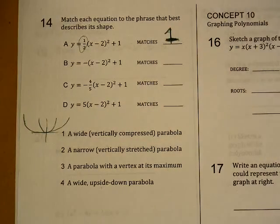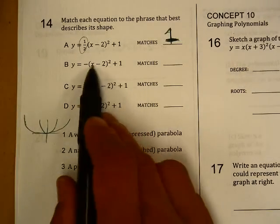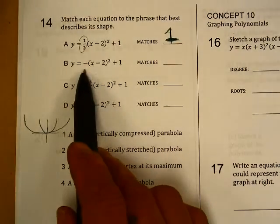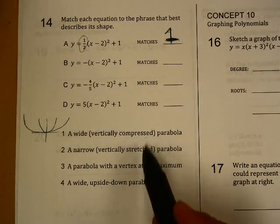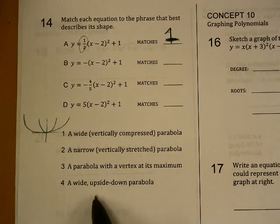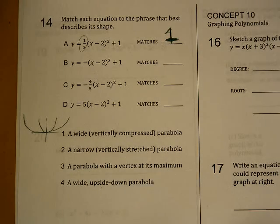Oh, that's a terrible looking one. Okay, so let's take a look at this one. There's no vertically compressed or vertically stretched. All it is is this one is turned upside down. So we're not compressed or stretched. We just need a parabola with a vertex at its maximum.